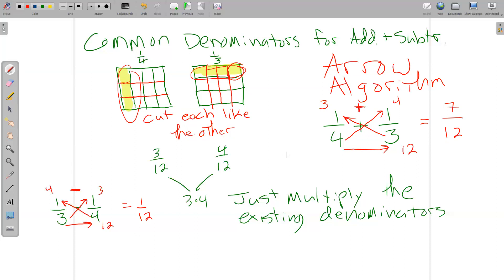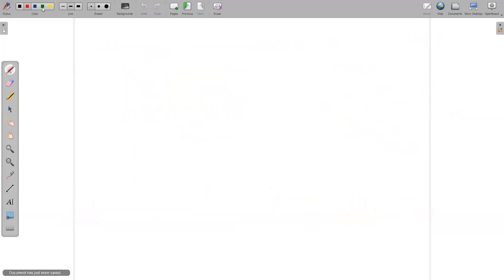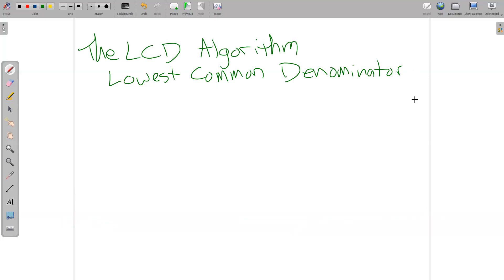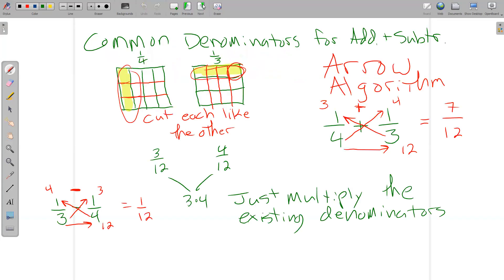The alternative algorithm to this arrow algorithm is called the LCD algorithm. And LCD stands for lowest common denominator. And we spent a lot of time in chapter four developing strategies to find the lowest common denominator. And so there's a little work that has to be done to do that. It turns out sometimes it's not much different than the arrow algorithm, but sometimes it is.